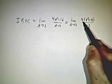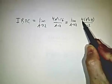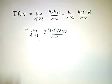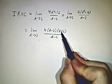We factor out a 4, and 4t squared minus 16 becomes 4 times t squared minus 4. And then we factor that as t minus 2 times t plus 2.